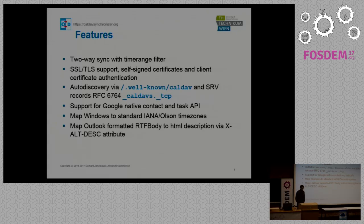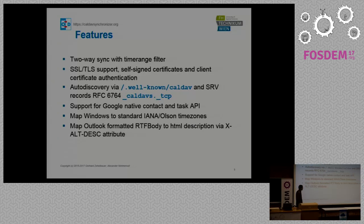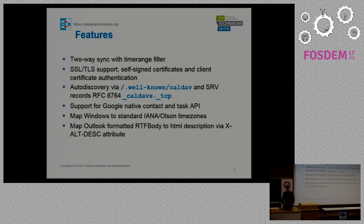Of course, we have transport layer security support. You can use self-signed certificates if you allow it explicitly, and client certificate authentication is possible as well. We support auto-discovery, which is also a nice feature. You can configure it on the server side so you don't need the exact calendar resource URL, like in Thunderbird — you can auto-discover all calendars if you just enter the server URL. It's also possible to have DNS SRV record lookups for discovery of the server address from the email address.